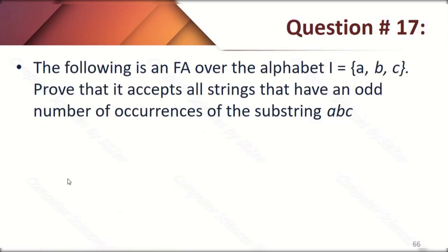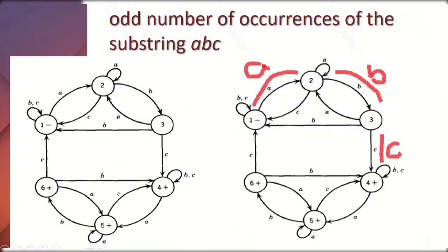Question seventeen: the following is an FA over the alphabet {A, B, C}. Prove that it accepts all strings that have an odd number of occurrences of the substring 'ABC'. In the diagram, the occurrences of substring 'ABC' are highlighted in red pen, demonstrating this property with the finite automaton.